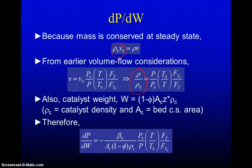Another thing that we know is that the total catalyst weight W is given by 1 minus phi, where phi is the void fraction, times the cross-sectional area times Z, times the density of the catalyst. With that in mind, we can put all that together and say how pressure drop changes with respect to weight of catalyst based on the Ergun equation. We have negative beta naught over the cross-sectional area times 1 minus phi times the density of the catalyst. These are all constants multiplied by P naught over P times T over T naught times FT over FT naught.